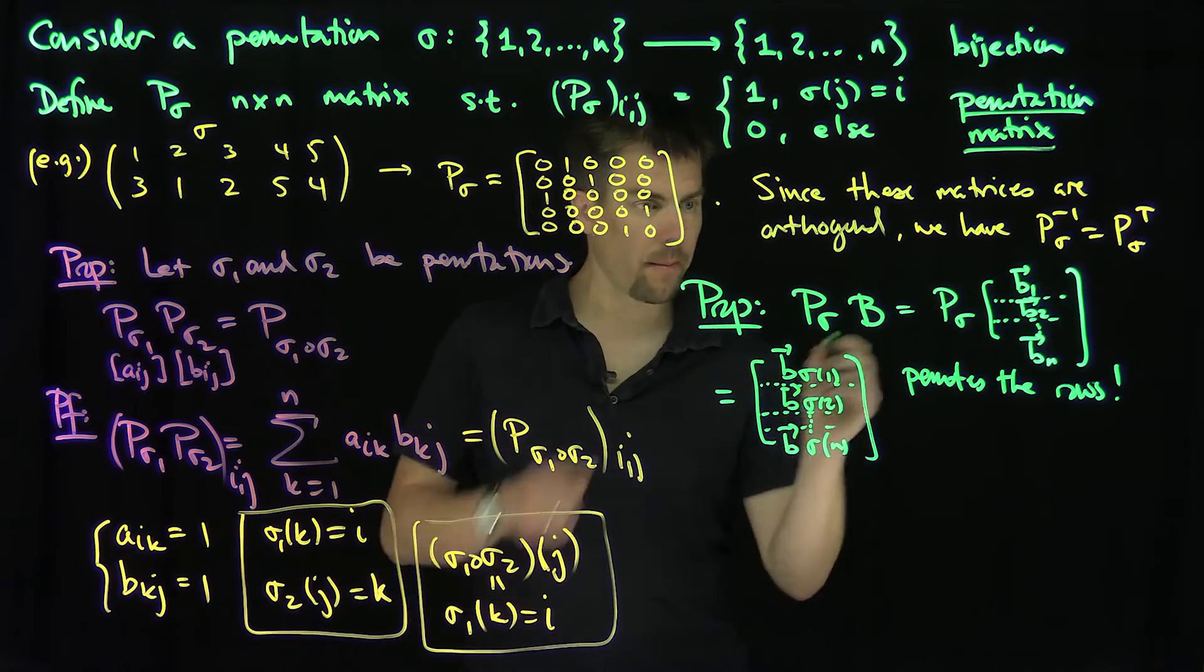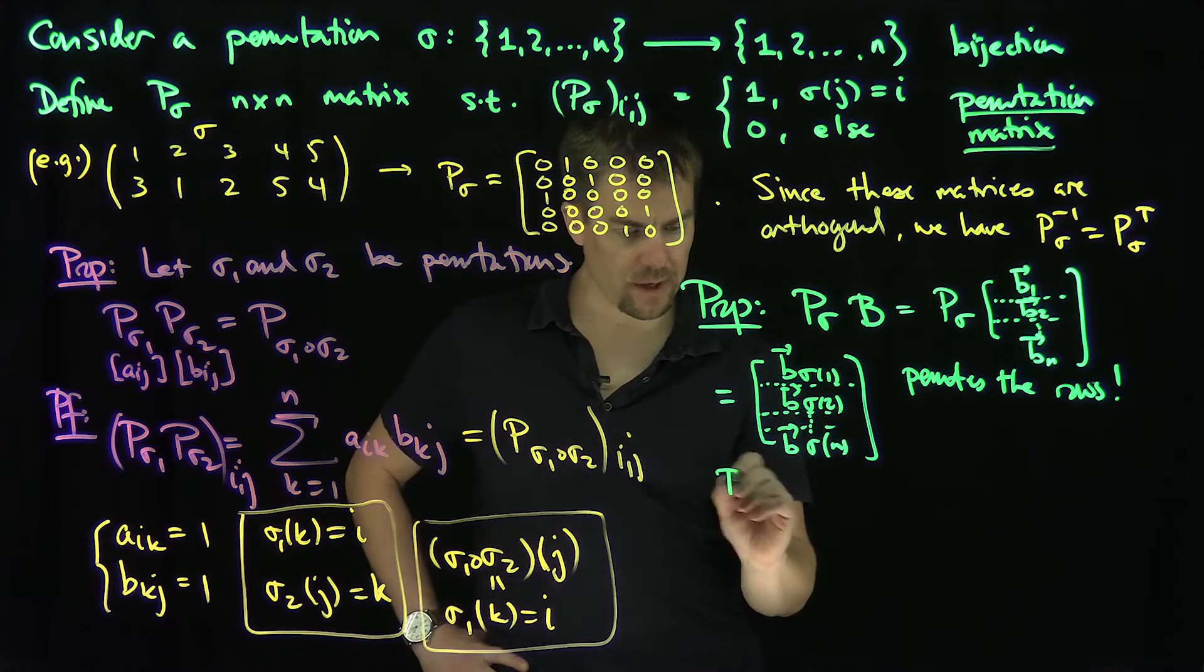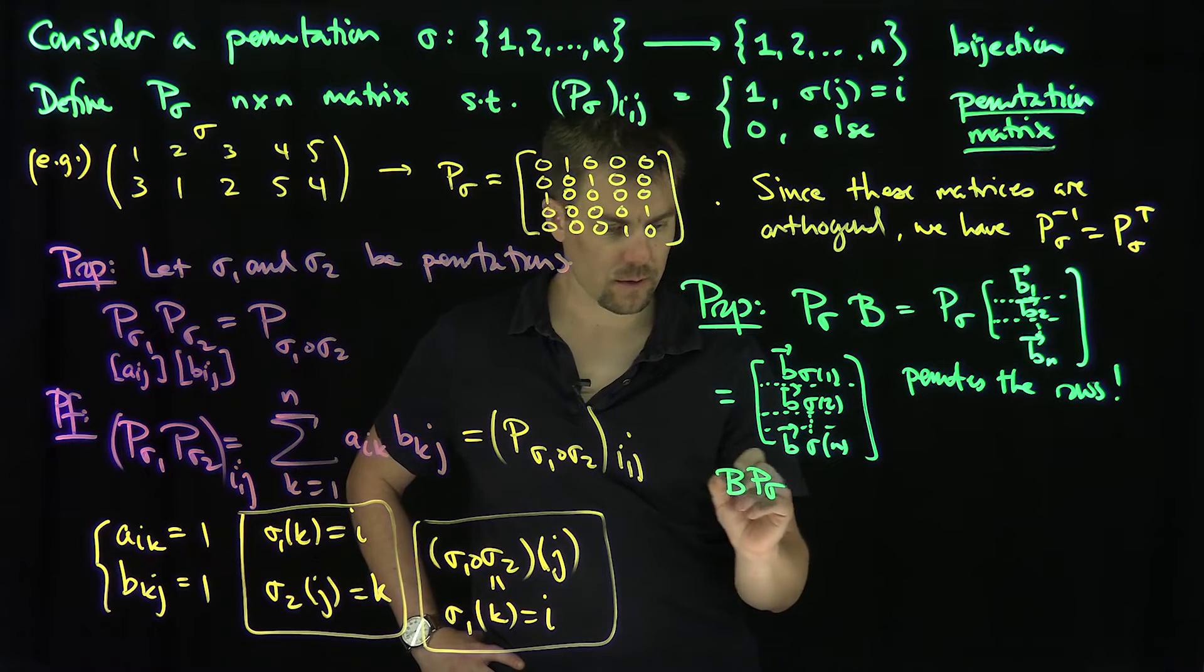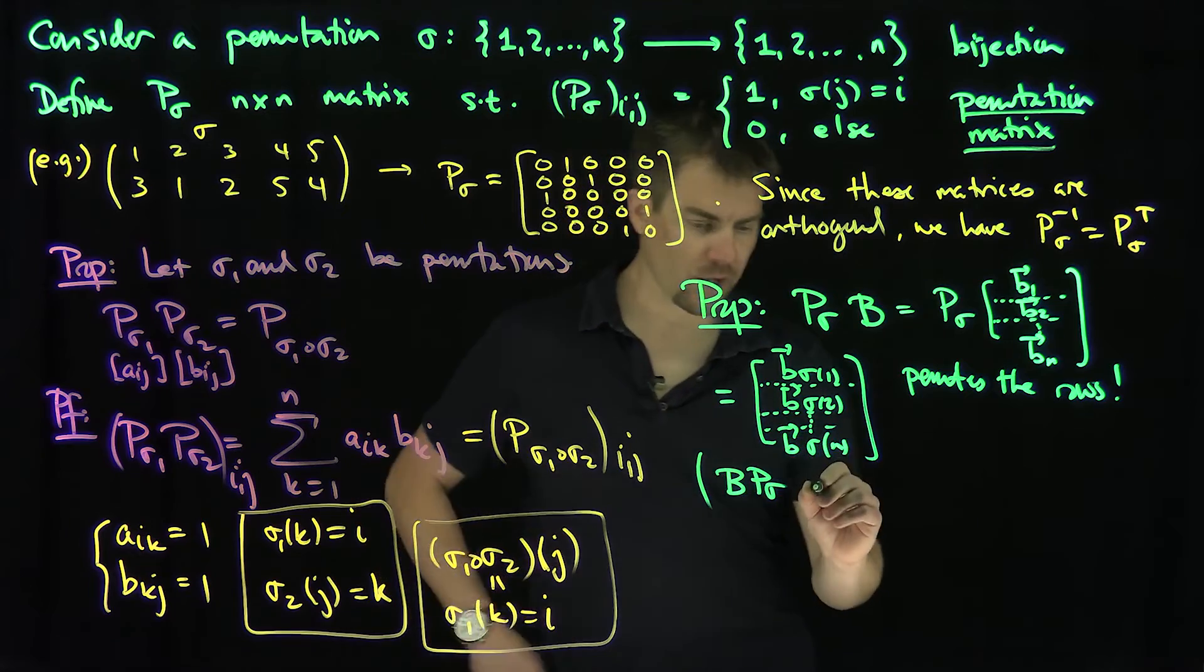And then if I put the P_sigma on the other side and then B P_sigma, similarly we'll permute the columns.